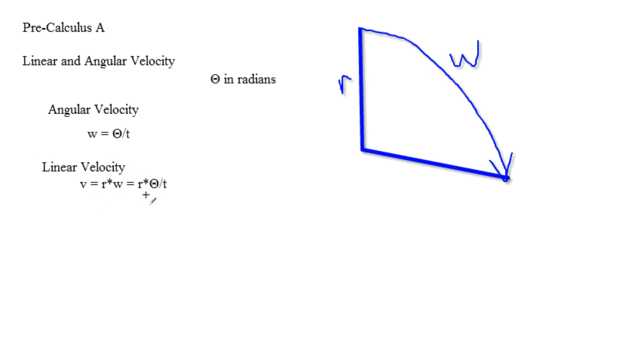And if you wanted a formula with all of the letters written out, it would be radius times theta divided by t. And it doesn't matter that you multiply in that order.